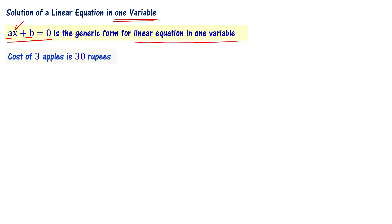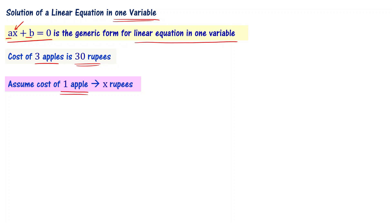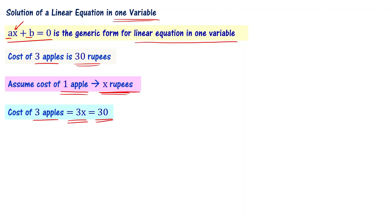Let us say we have a statement like: cost of three apples is 30 rupees. This is a linear equation in one variable. Let us assume that cost of one apple equals x rupees. Then cost of three apples is 3x. So, cost of three apples equals 3x, which equals 30.